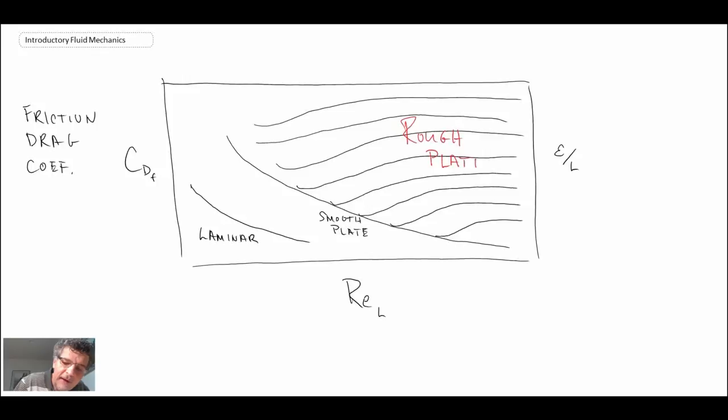And that enables you to calculate drag on flat plates that are not smooth, turbulent, and with different amounts of roughness. So that is the turbulent boundary layer, estimates of the boundary layer thickness, as well as the friction coefficient or the drag coefficient on those flat plates.